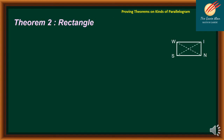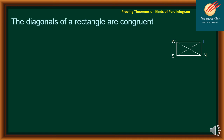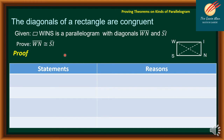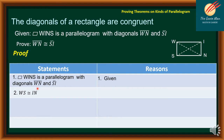Let's move on to Theorem 2 on rectangle, which states that the diagonals of a rectangle are congruent. Given that quadrilateral WINS is a parallelogram with diagonals WN and SI, we want to prove that WN is congruent to SI. We will use the illustration on the right side. Statement 1: WINS is a parallelogram with diagonals WN and SI — reason: given. Statement 2: WS is congruent to IN — reason: opposite sides of a parallelogram are congruent.